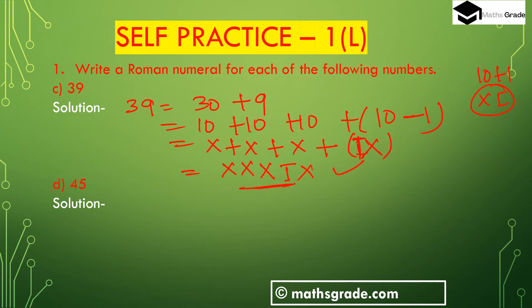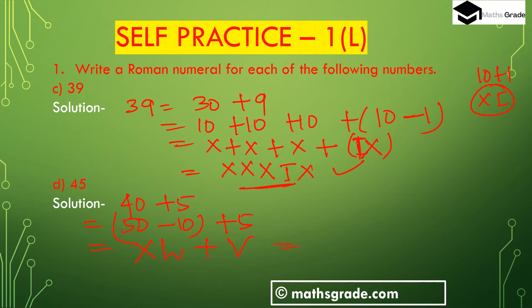Part (d): 45. We write 45 as 40 plus 5. Here 40 is 50 minus 10. Since subtraction is involved, we write 10 first (X) then 50 (L), giving XL. Then 5 is V. So 45 in Roman numerals is XLV. To summarize: 39 is XXXIX and 45 is XLV.